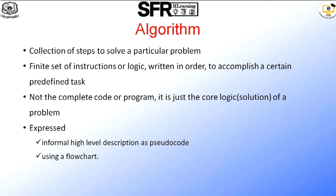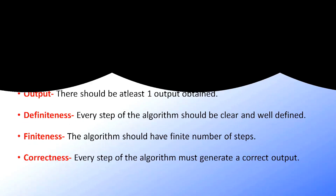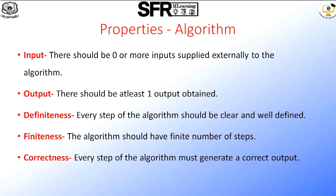Any algorithm can be expressed in the following ways: as pseudocode in any high-level language, or by using a flowchart. Every algorithm must follow these properties: input, output, definiteness, finiteness, and correctness. Input means each algorithm must accept zero or more inputs, but it should produce at least one output. Definiteness means each step must be clear and well defined, and completed within a finite number of steps. Correctness means every step must generate the correct output — then only is the algorithm valid.